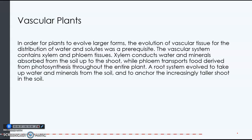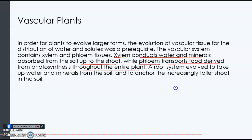A plant evolving to have vascular tissue means that it can grow taller. The vascular tissue is divided into xylem, which conducts water and minerals up from the root to the shoot, and phloem tissue, which transports the food produced by photosynthesis throughout the entire plant. The phloem starts in the leaves and then spreads throughout the branches, stems, and down to the roots.